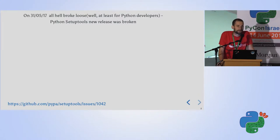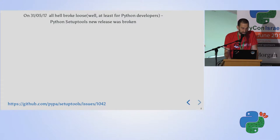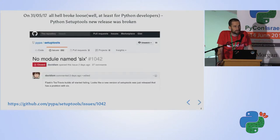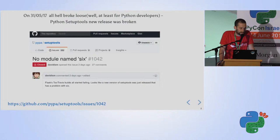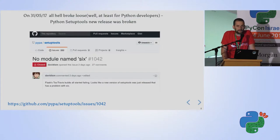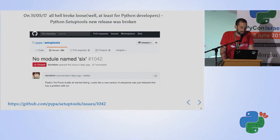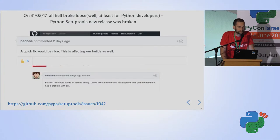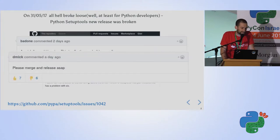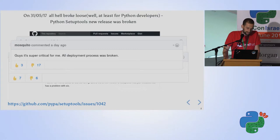But soon I saw that our other Python projects were also broken. It turned out that setuptools had released a new version that was broken. Very quickly I saw there was a GitHub issue opened — it started very innocently with 'no module named six'. Setuptools is probably the building block of most Python packaging today, so it was quite critical. At the beginning people were pretty polite and asked for it to be fixed, but as time passed people were less polite, and there was already a PR open to fix it.